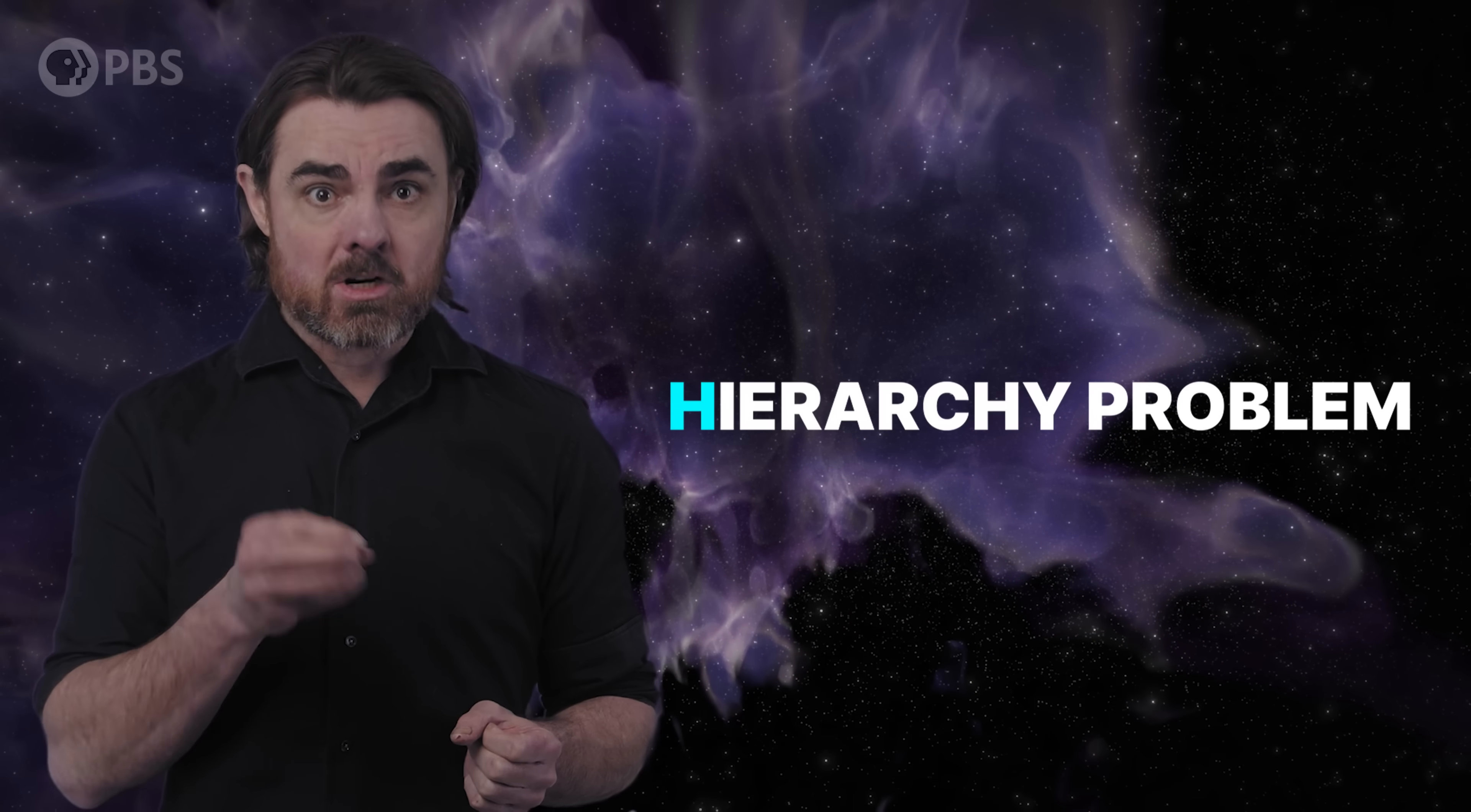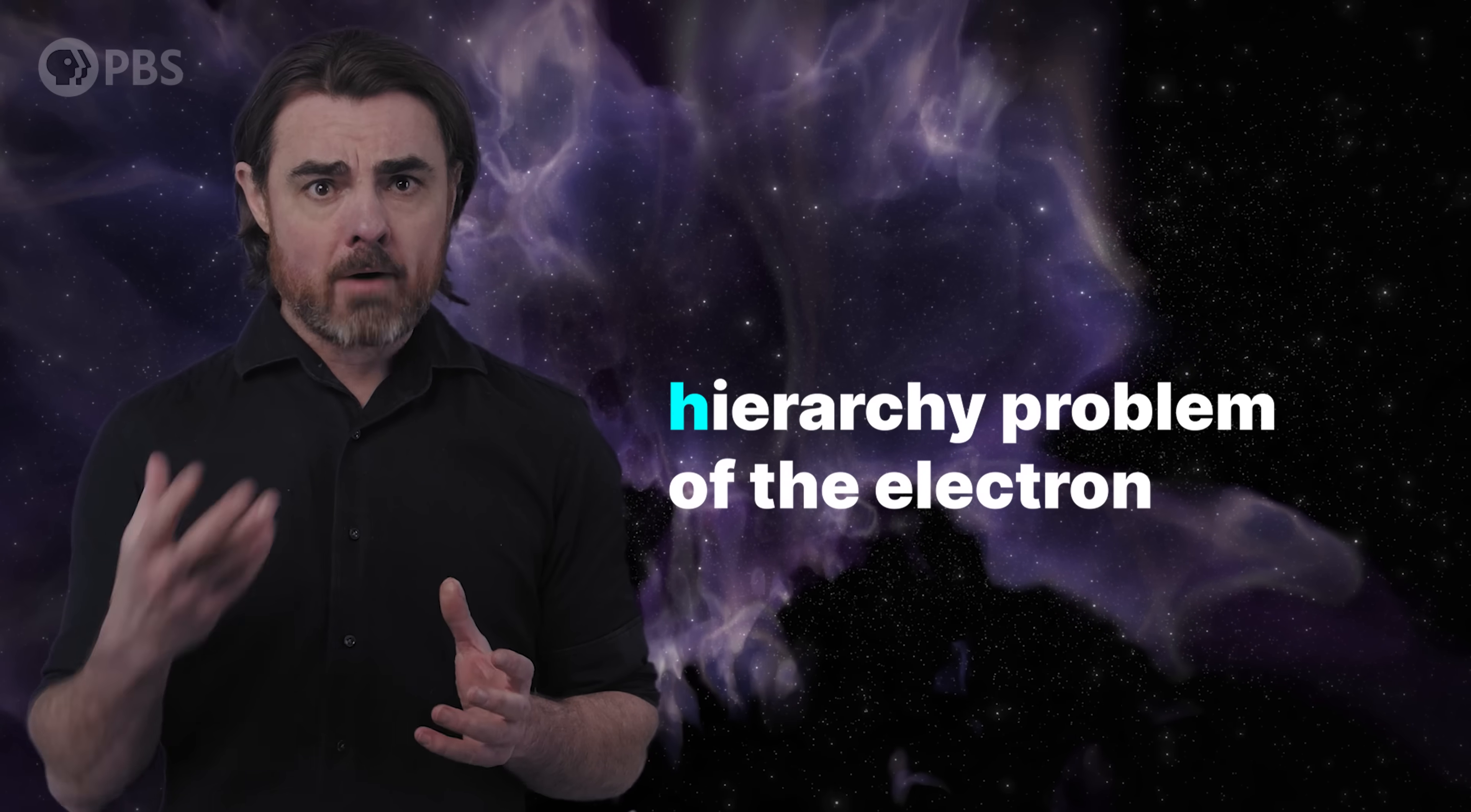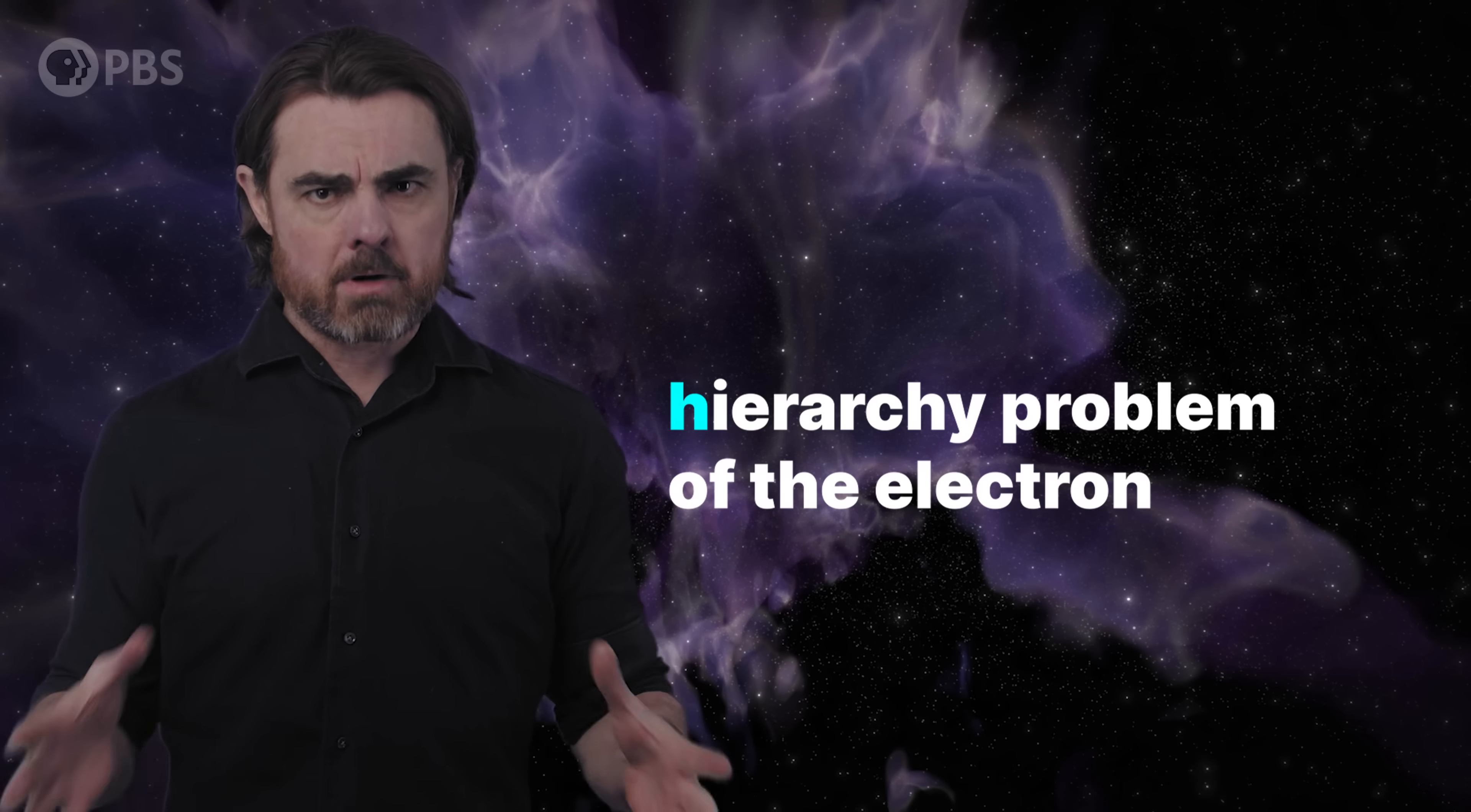That would be catastrophic for our universe, and so we should be grateful that the small Higgs mass is somehow protected. We just don't know how it's protected. But to fully appreciate why it's surprising that we haven't been able to find the mechanism for this protection and why the capital H hierarchy problem is such a big deal, we're going to start with the small-h hierarchy problem involving the electron.